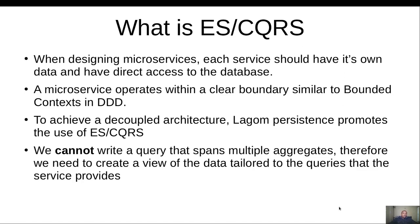When we are designing microservices, each service should have its own data and have direct access to the database. There must be no sharing of data across different services, since it would lead to tight coupling. A service should be the sole accessor of its data in the database. If you have a product service with a product table and a user service with a user table, the product service should only ever access the product table and the user service should only ever access the user table.